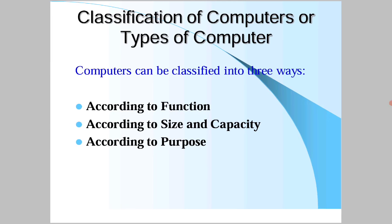What are the different types of computers? Computers can be classified in three ways: first, according to their function; second, according to their size and capacity; and third, according to their purpose. This is a compulsory exam question from Unit One.